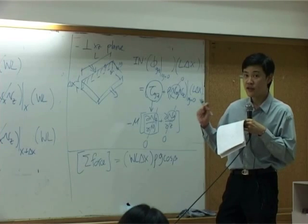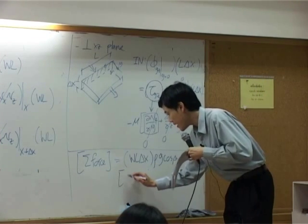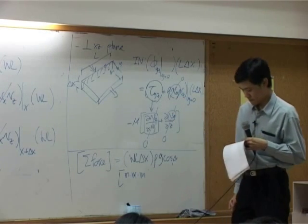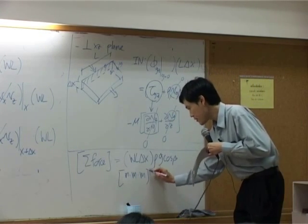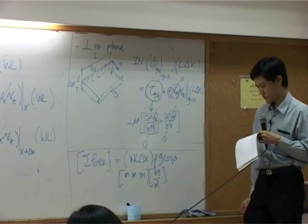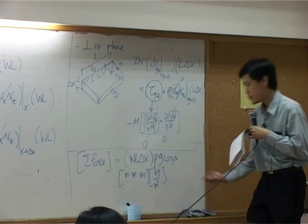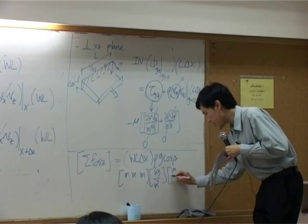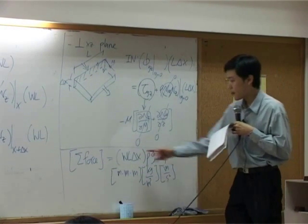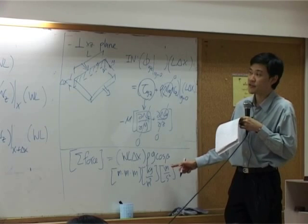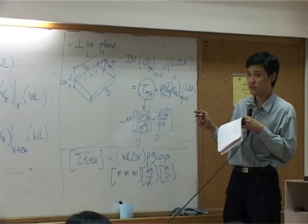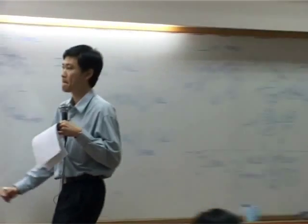If you check the unit, w is meter, l is meter, delta x is meter. Rho here is kilogram per cubic meter. G here is meter per second squared. Cosine has no unit. So the overall unit complies or consistent with unit of momentum rate.